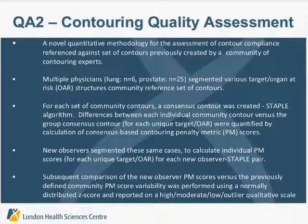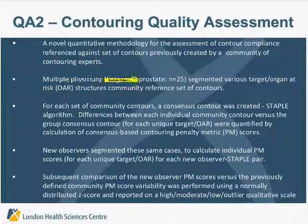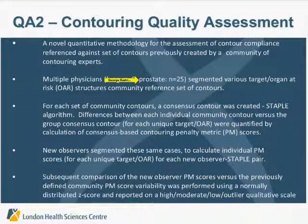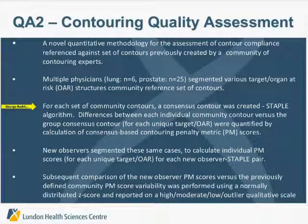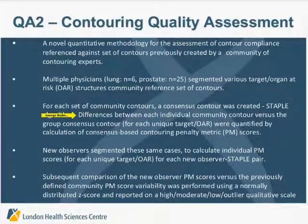What we did was come up with a project looking at multiply-contoured datasets. We had a series of 10 lung cases contoured by six physicians, and one multiply-contoured prostate dataset provided by ROR covering prostate and OAR contours. For each set of community contours, we created a STAPLE or consensus contour to reflect what the average or consensus contour should be, and then compared each individual contour against that staple and applied penalty metric scores to derive numbers.